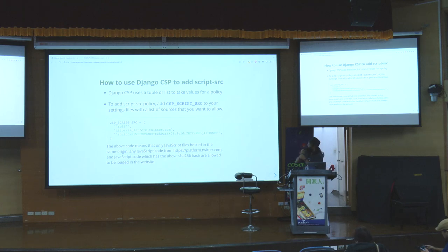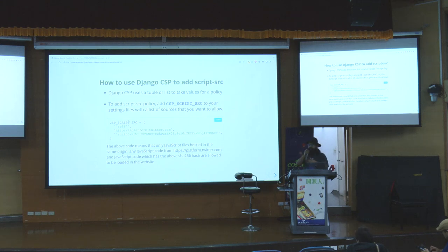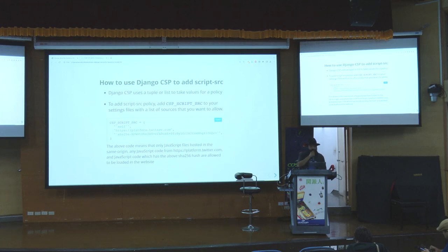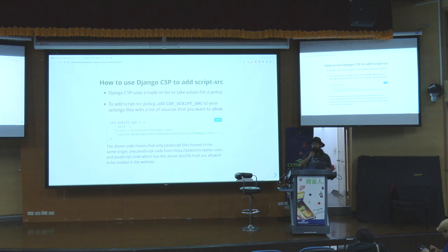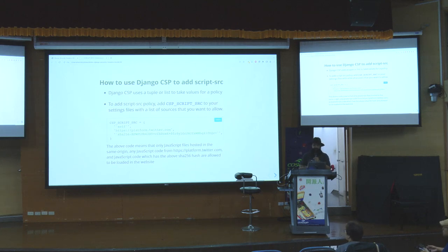To use Django CSP, once you have the middleware installed, you add variables like CSP_SCRIPT_SRC, which takes a list or tuple of allowed sources. For example: self for your own website, platform.twitter.com for Twitter embeds, and a SHA-256 hash for a specific inline script. They also have unsafe-inline and unsafe-eval variables, which are not recommended — unsafe-inline basically says load any kind of inline script, which defeats the purpose of CSP. Please try to avoid doing that.